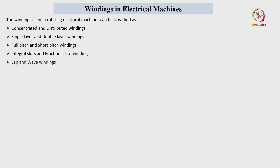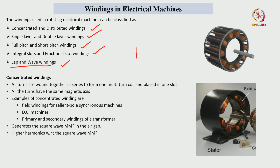The windings used in electrical machines are classified as concentrated and distributed windings, single layer and double layer windings, full pitch and short pitch windings, fractional slot and integral slot windings, lap winding and wave windings. Lap and wave windings are used in DC machines. In concentrated windings, all conductors are placed at one particular place — examples include inductors, transformers, DC machine field windings, and field windings of salient pole synchronous machines — and they generate a square type MMF waveform with higher harmonics.